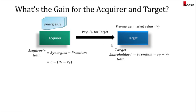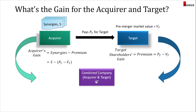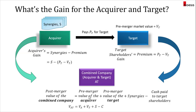Once the deal is accepted by the target, the acquirer and target will merge and we will have the combined company, which we'll call AT. The post-merger value formula is: the pre-merger value of the acquirer (V sub A) plus the pre-merger value of the target (V sub T), plus synergies (S), minus the cash paid to target shareholders (C). So V sub AT equals V sub A plus V sub T plus S minus C.